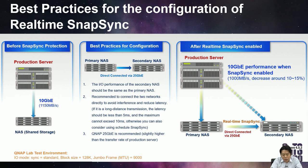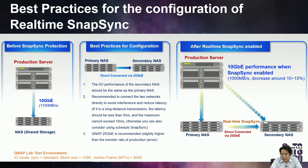We ran tests in our QNAP lab. Before SNESync, the production server connected to the primary NAS over 10GbE could reach full bandwidth of around 1,150 MB/s. After enabling real-time SNESync, performance decreased by only about 10%, still delivering around 1,000 MB/s.